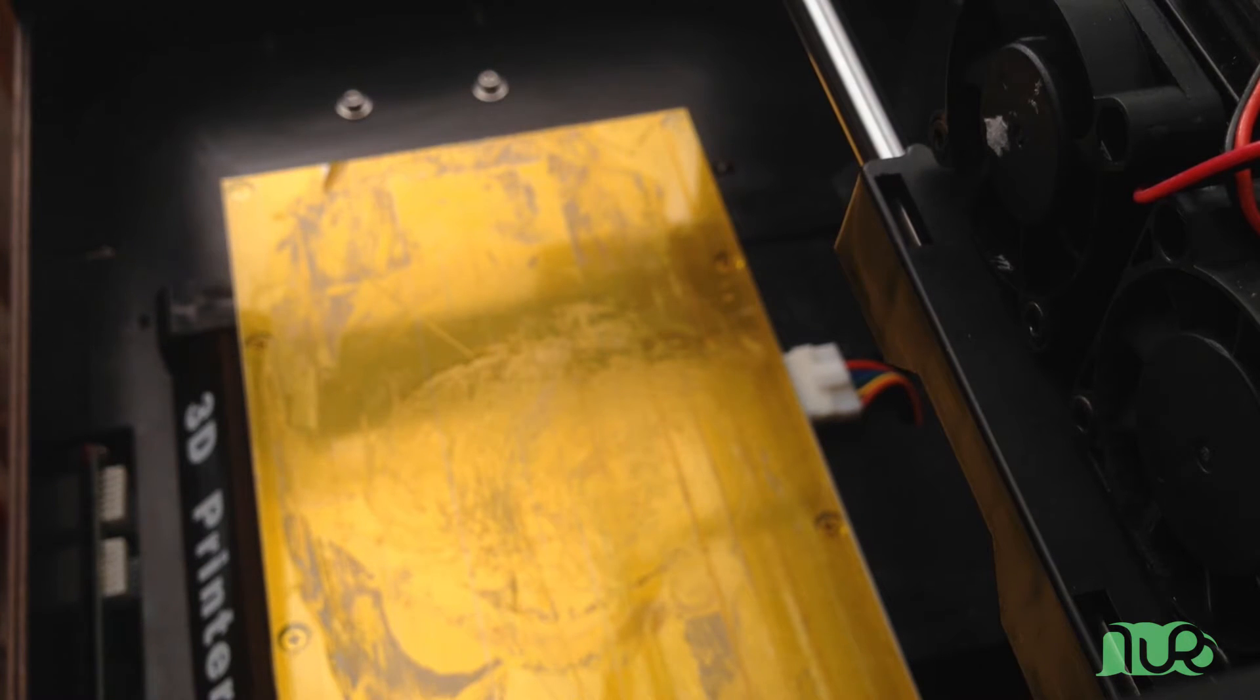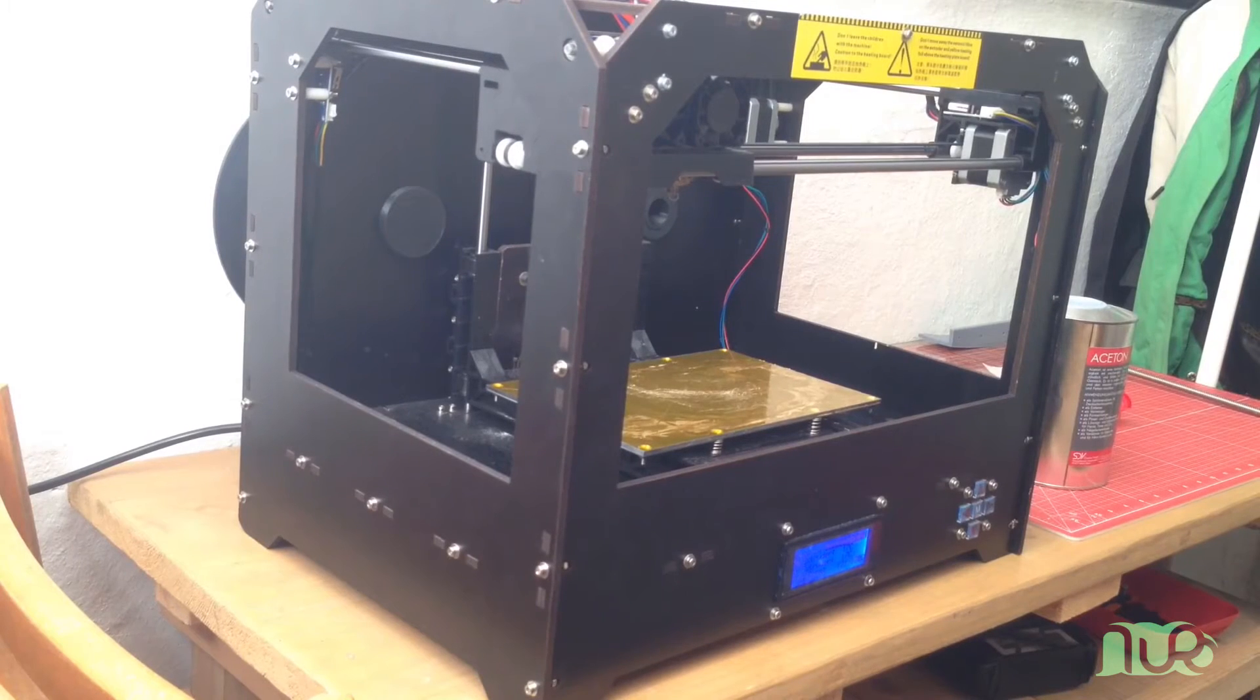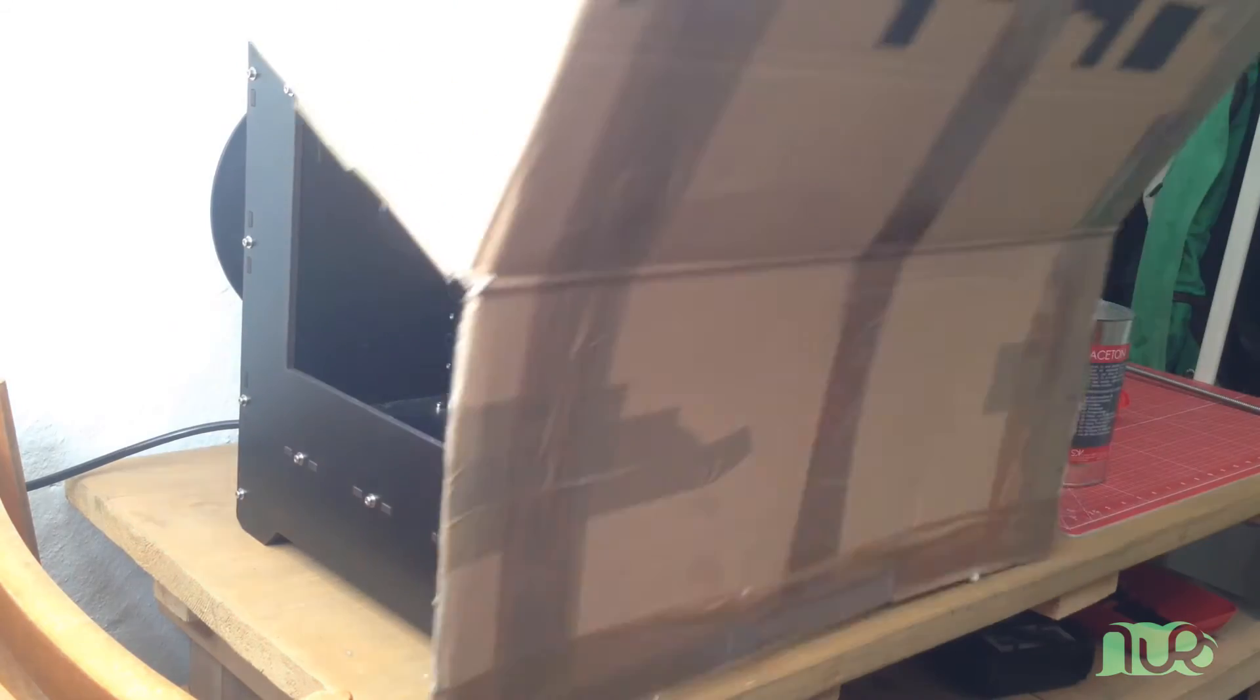And now I just switch on the 3D printer and start printing with the normal settings I use. I use around 250 degrees for the extruder, and the build platform is heated to around 130 degrees.